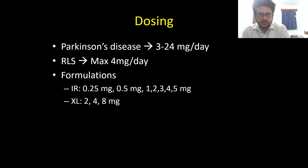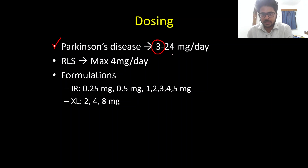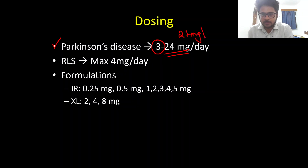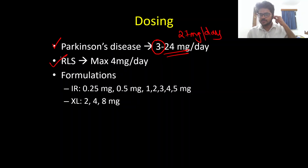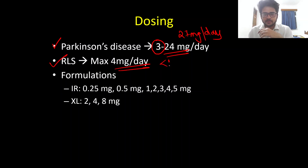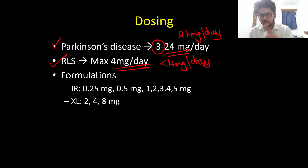Regarding dosing, for Parkinson's disease we usually start at around 3 mg per day, which can go up to 24 or even 27 mg per day. For restless leg syndrome, the dosage is much lower, with a maximum dose of less than 4 mg per day.